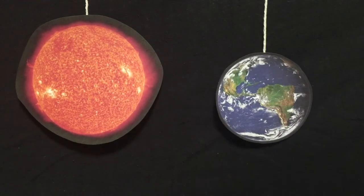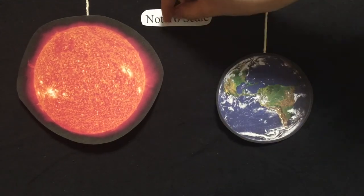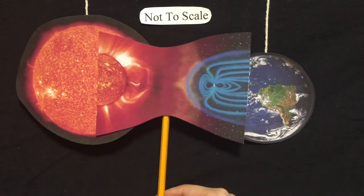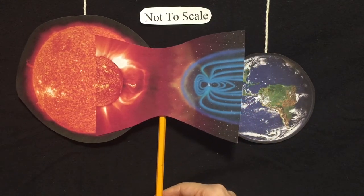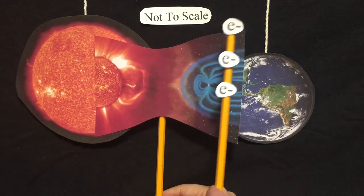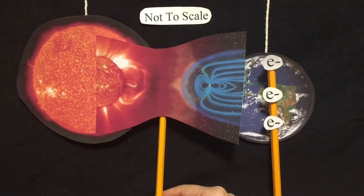From the sun, some of those particles make their way towards Earth. As they get closer to Earth, our magnetic field pushes away a lot of those particles. However, closer to our poles, our magnetic field is bent, and that allows the solar wind to enter Earth's atmosphere.